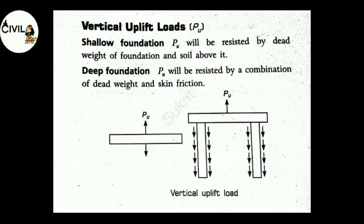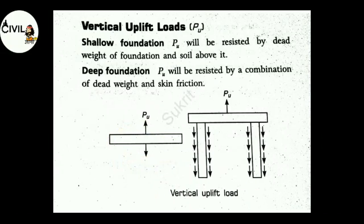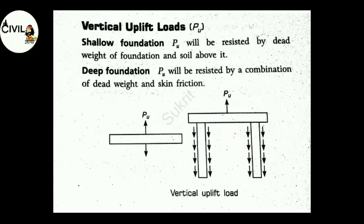For vertical uplift loads PU: in shallow foundation, PU will be resisted by the dead weight of the foundation and soil above it — meaning the foundation dead weight plus the overlying soil will resist the uplift. In deep foundation, PU will be resisted by a combination of dead weight and skin friction, meaning the vertical uplift load is resisted by dead weight and skin friction.